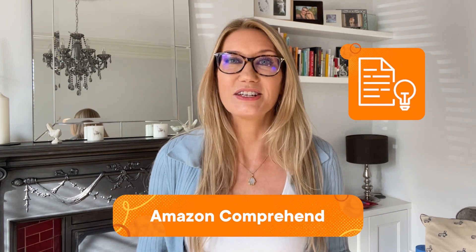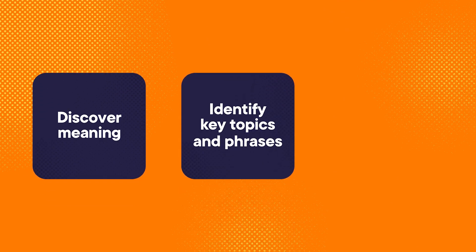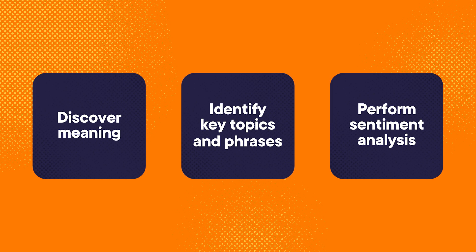Number one is Amazon Comprehend. This is a service that uses natural language processing and machine learning to process text. Natural language processing is a way for computers to analyze, understand and derive meaning from text. Comprehend can be used to discover meaning, identify key topics and phrases, and even perform sentiment analysis on unstructured text — for example, documents, emails, or web pages. One example use case is to use Comprehend to analyze social media feeds and perform sentiment analysis to discover whether customer sentiment is positive, neutral, or negative.